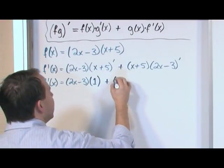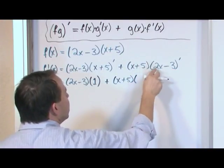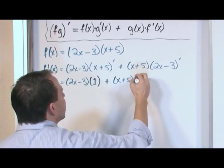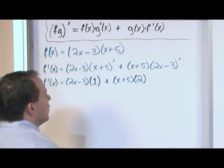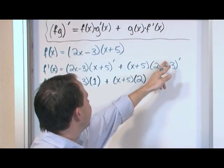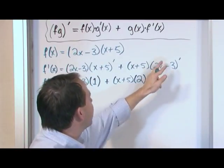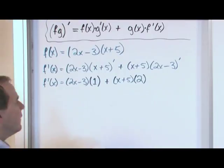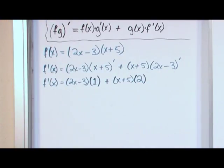Plus (x + 5) times the derivative of (2x − 3). The derivative of 2x is 2 — the 1 from the exponent comes down, multiplies the 2, and x to the zero disappears. The derivative of the constant −3 is zero. So the derivative of (2x − 3) is 2.